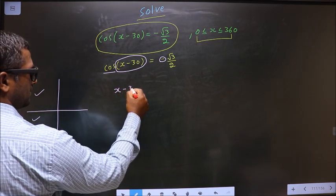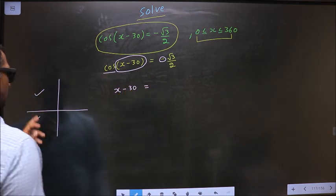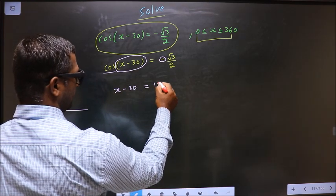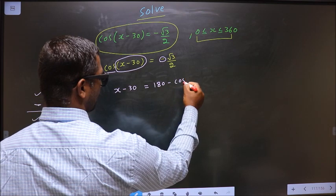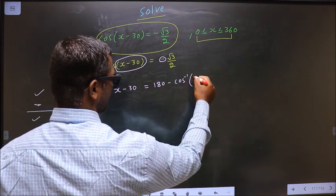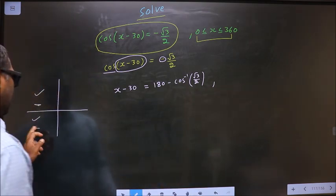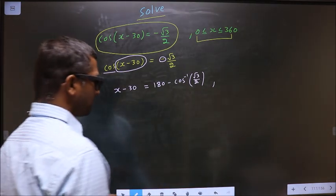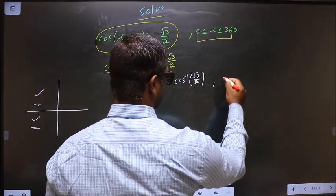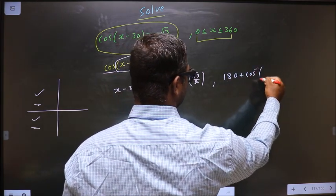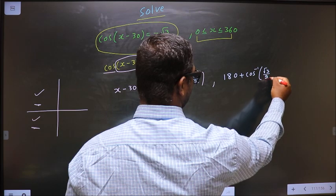So x - 30 equals... To get an angle in the second we do 180 - cos inverse √3/2. To get an angle in the third we do 180 + cos inverse √3/2.